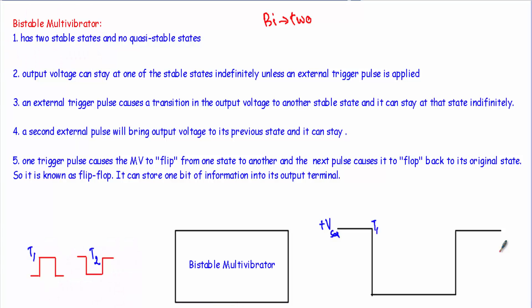In this video, I will show you the detailed operation of an operational amplifier bistable multivibrator circuit. First, let me talk about what is a bistable multivibrator. The word 'bi' means two. Therefore, bistable means our output voltage will be stable at any of the two output states. The bistable multivibrator has two stable states, and since it has only two states, it will have no quasi-stable state.